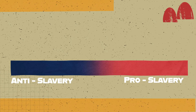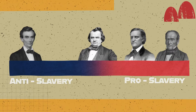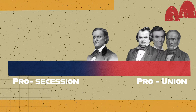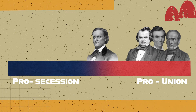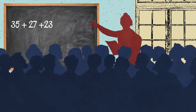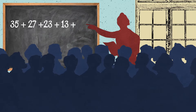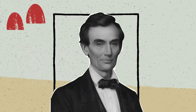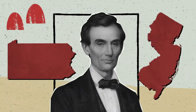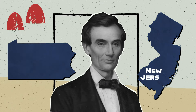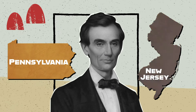Four presidential candidates, each with different views on slavery and secession, captured the spotlight in the 1860 election. In the midst of these divisions, anti-slavery number crunchers in the Republican Party did the math and decided Lincoln had a chance if he could attract electoral votes in swing states like New Jersey and Pennsylvania.